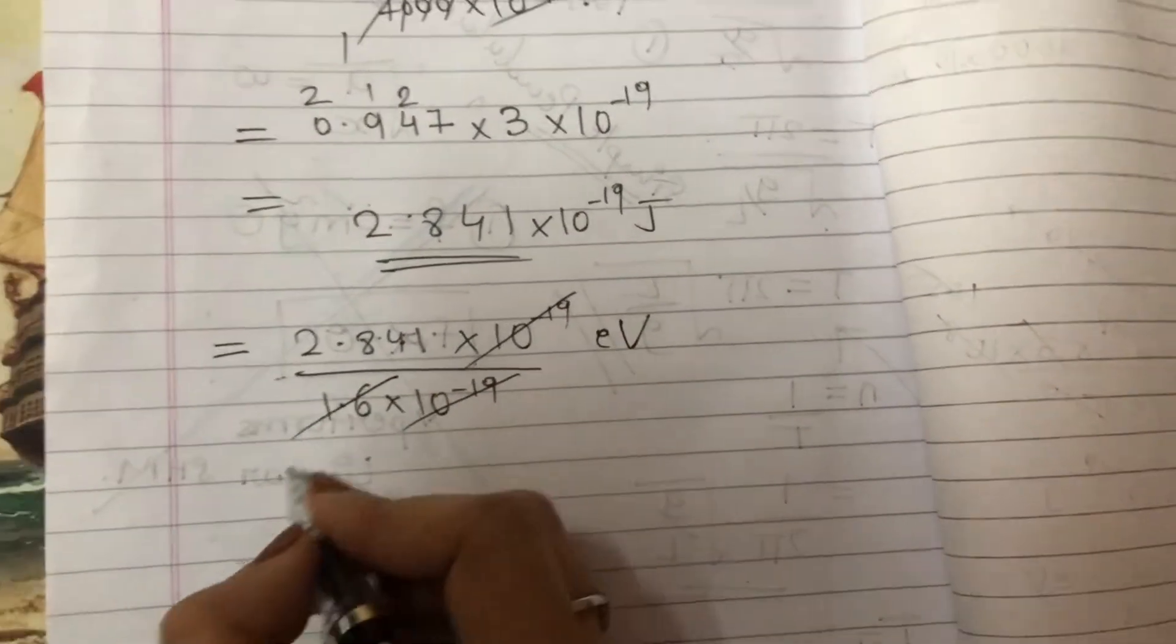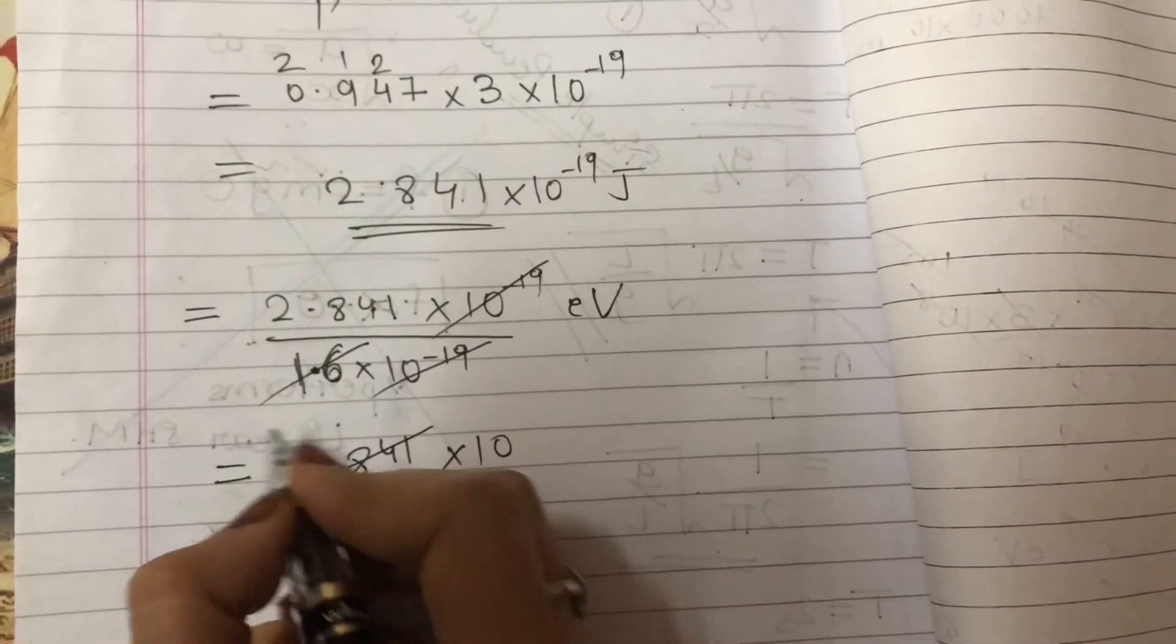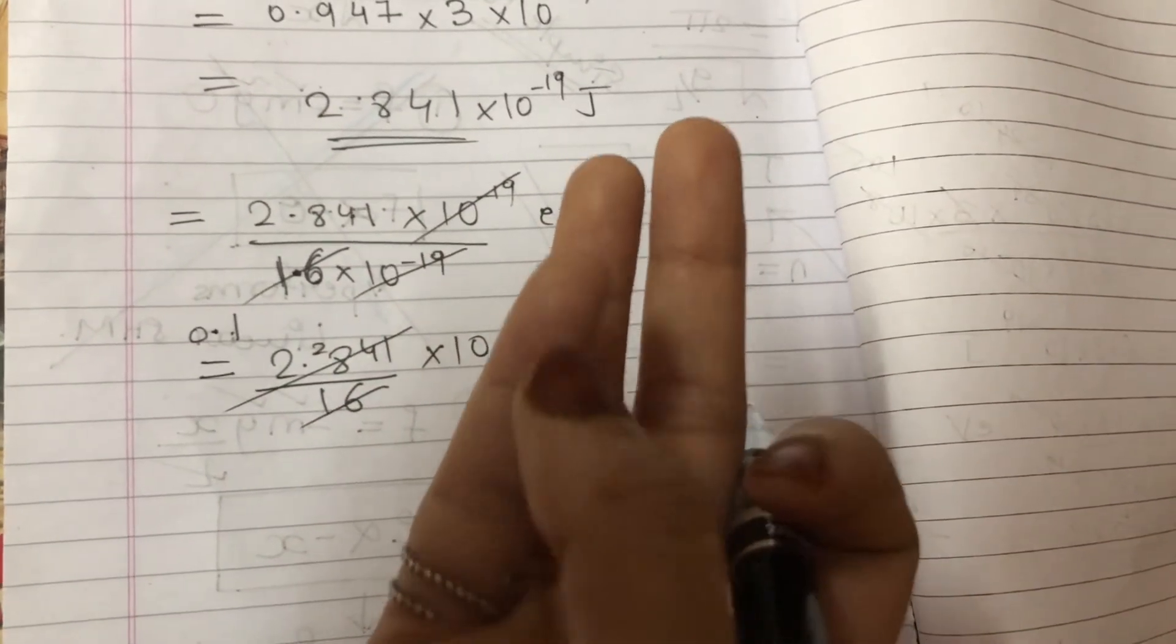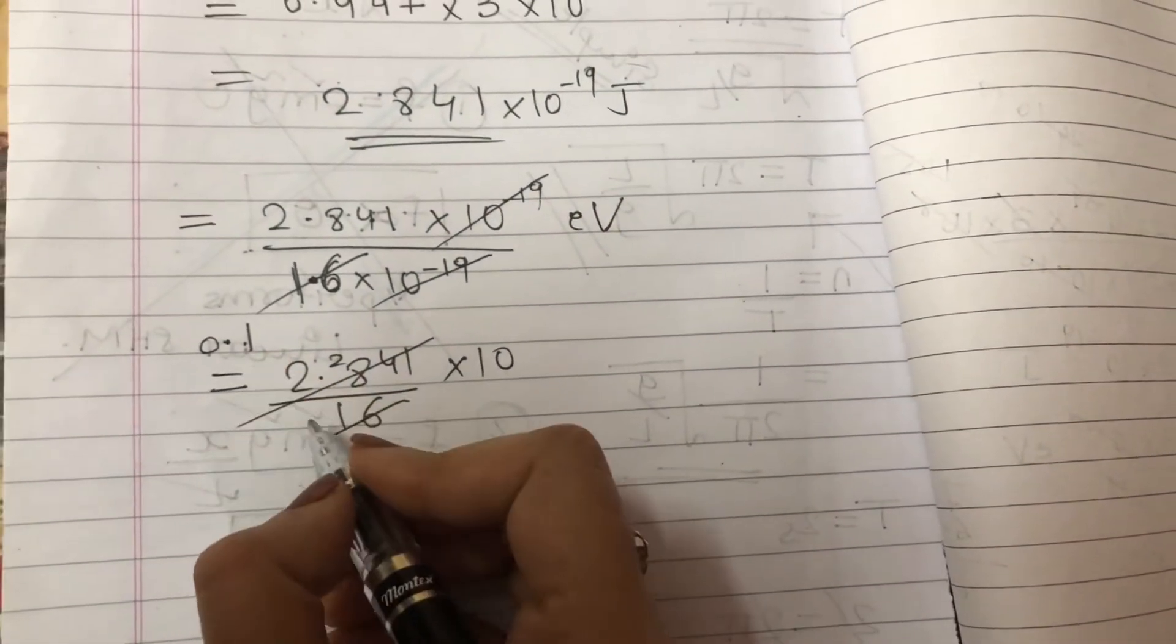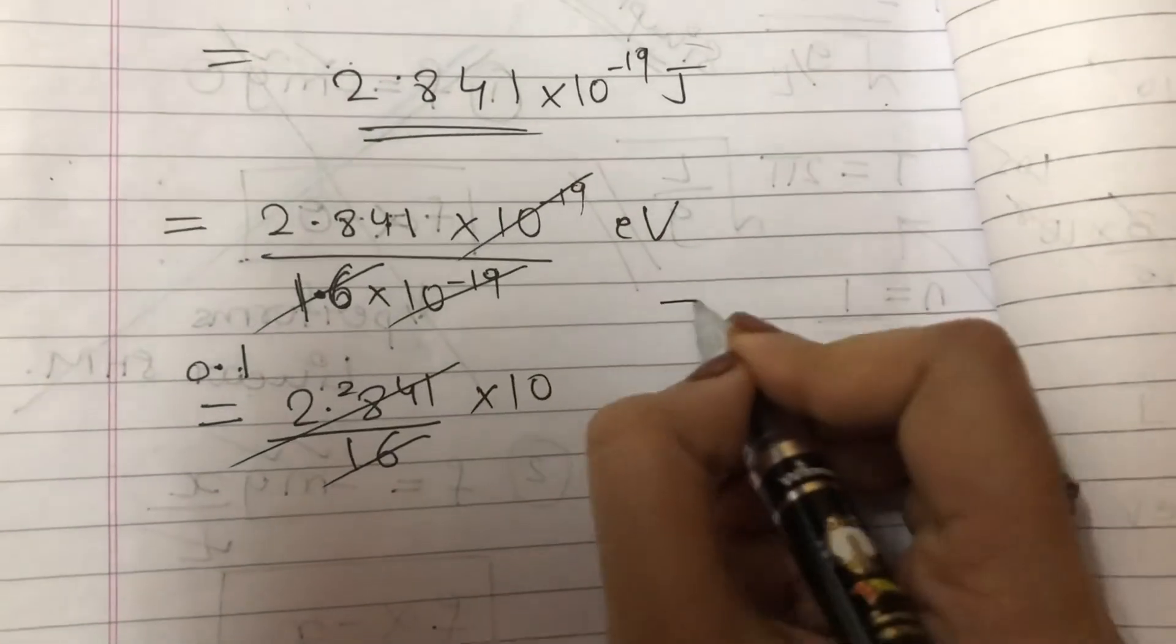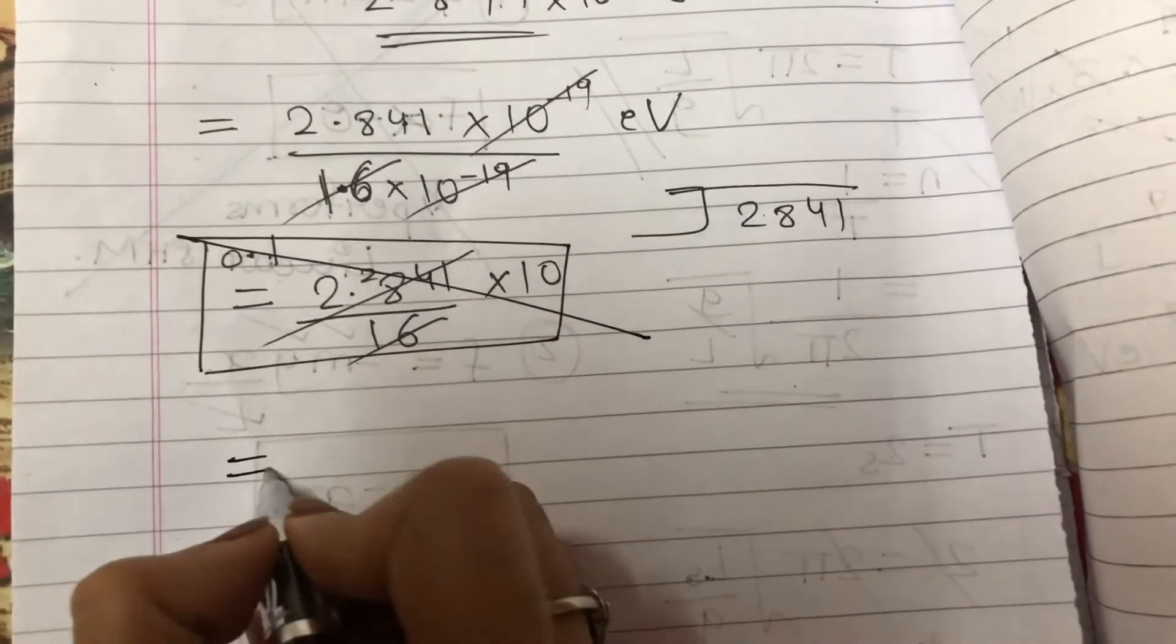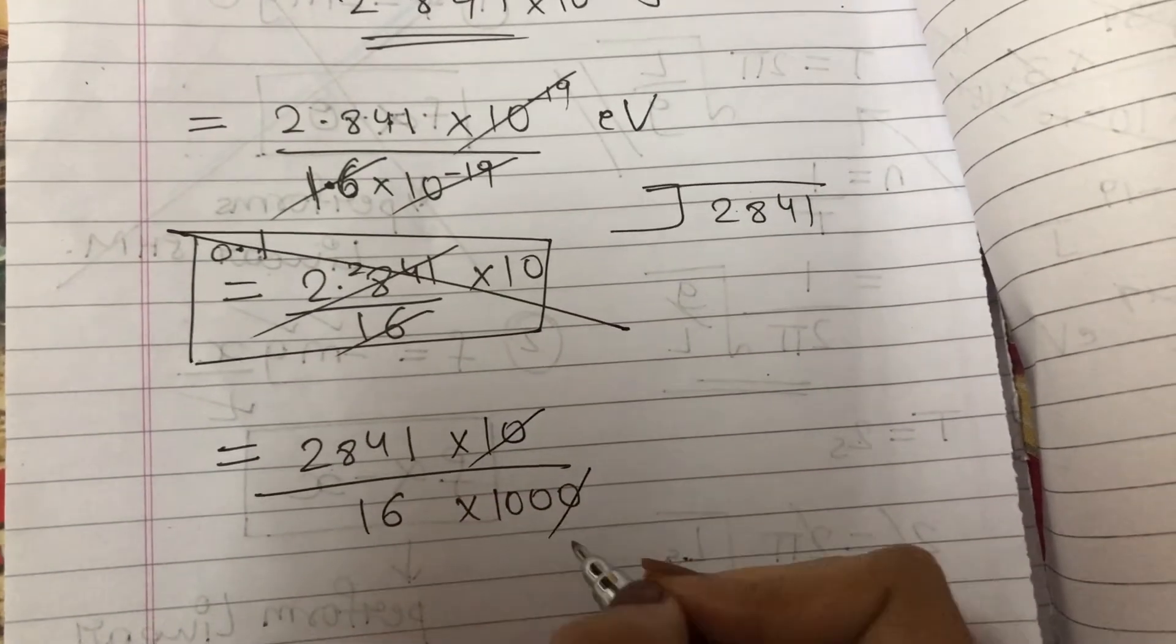Let it be 1.6 over here. So 2.841×10 divided by 16. This is 2841 with point after 3 digits. 16 with point after 1 digit. We are dividing by 16. Working through the division calculations step by step.